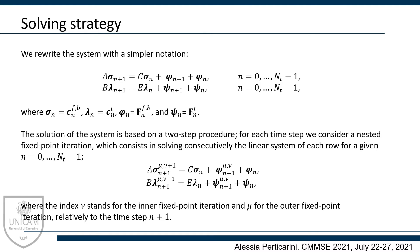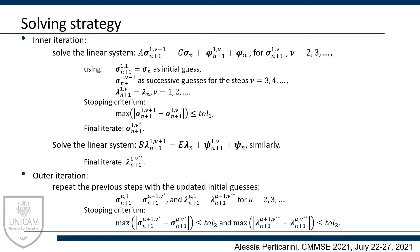The solution of the system is based on a two-step procedure. For each time step, we consider a nested fixed-point iteration, which consists in solving consecutively the linear system of each row for a given iteration index. In particular, the index nu stands for the inner fixed-point iteration while mu stands for the outer. In more detail, the inner iteration is reported in the slide for fixed mu equal to 1.